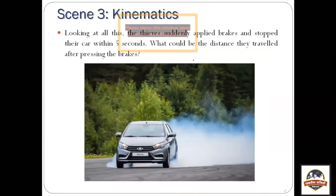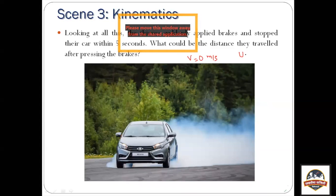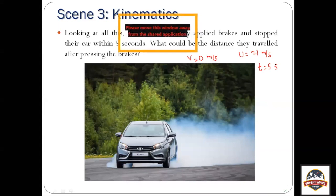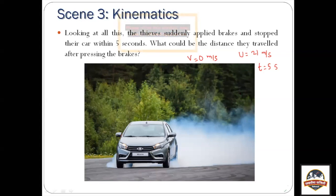Moving ahead, the thieves suddenly apply brakes and stop their car within 5 seconds — again a problem dealing with kinematics. The car has a final velocity of 0 m/s because it stops, an initial speed of 21 m/s, and it stops in 5 seconds. You have to find the distance the car travelled before coming to a halt. Using s = ut + ½at² or v² = u² + 2as, you can find the stopping distance. The same principles of kinematics can be used to analyze different situations, like a car that is stopping.